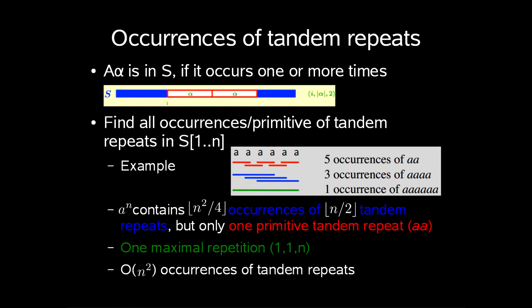So in our observation, we have seen that there can be no more than O(n²) occurrences of tandem repeats in the string S. But how many are, for example, given primitive?